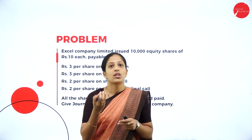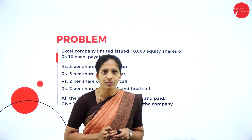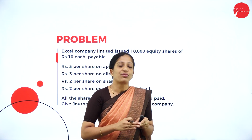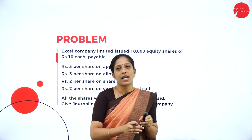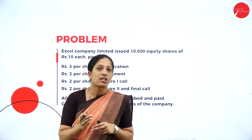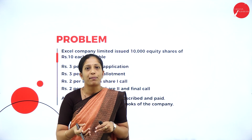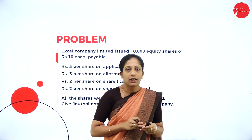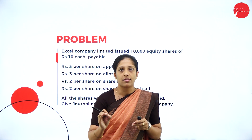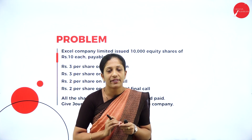We also learned what journal entries to record in the books of account during issue of shares — that is the accounting treatment. There are two types of shares: preference shares and equity shares. Preference shares carry a preferential right in payment of dividend and repayment of capital during winding up. Under preference shares there is a fixed rate of dividend paid every year.